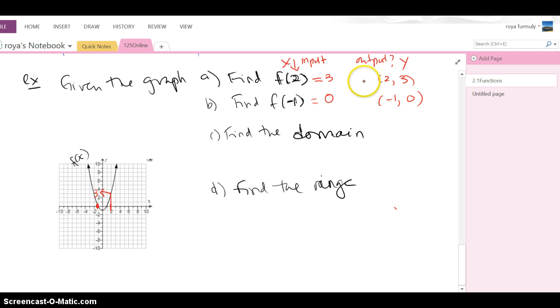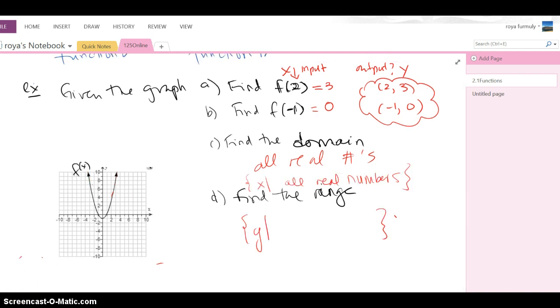In part C, it says find the domain. So the domain is all the x values and I'm going to walk left to right and see what x values it covers. Well, it covers all x values because this thing not only goes up, but it also goes to the right. So all real numbers is the domain because as I'm walking left to right, I have x values everywhere and my graph covers everything from the left all the way to the right. So in set notation, I could say x such that x is all real numbers.